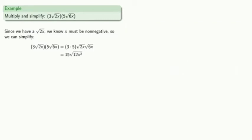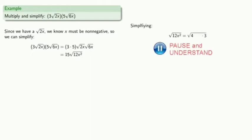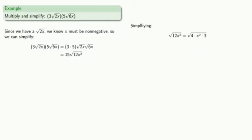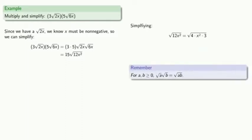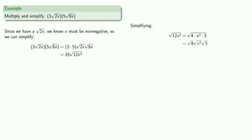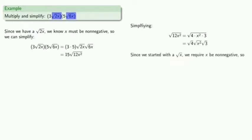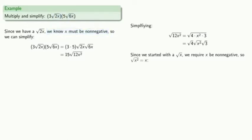Let's see if we can simplify by factoring 12x² and isolating perfect square factors. So 12 is 4 times 3, and x squared is a perfect square. The square root of a product is the product of the square roots, so we can rewrite this. And since we started with a square root of x, we require that x be non-negative, so we can say that the square root of x squared is just equal to x.